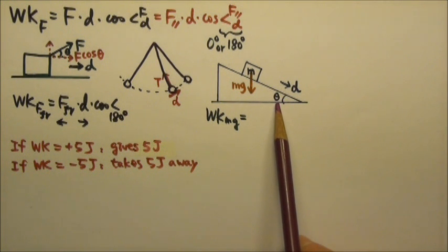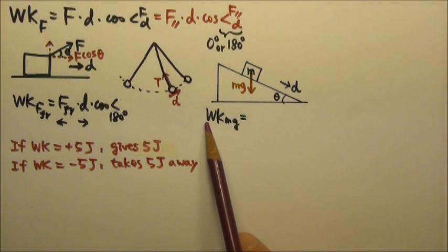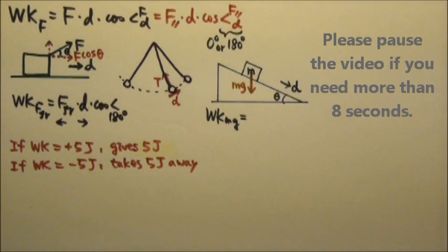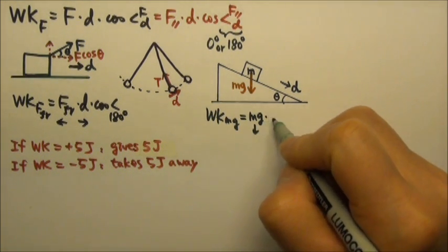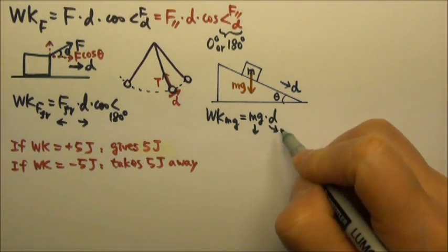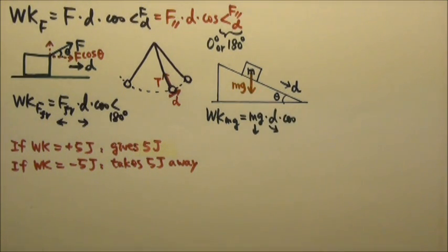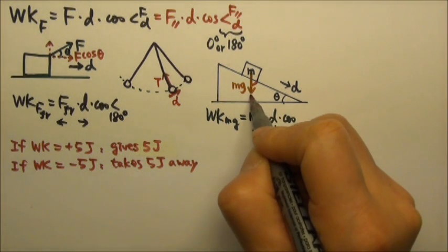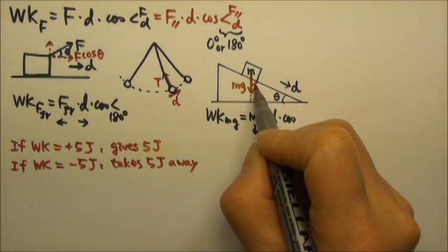Now let's look at this box on the incline. The box slides down the incline for a distance d. Let's find the work done by mg. The work is mg, which goes straight down, times the displacement, which goes slanted, times the cosine of the angle between mg and d. We have a right triangle, so if the incline angle is theta, the angle between mg and d is 90 degrees minus theta.